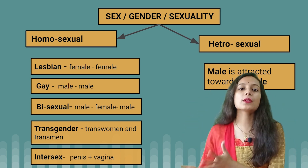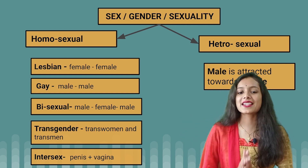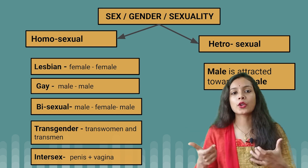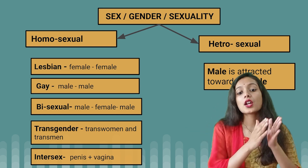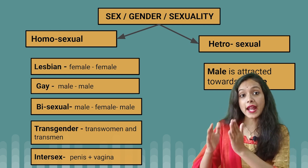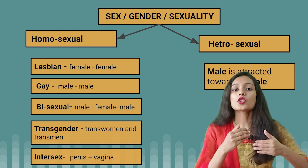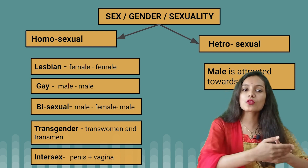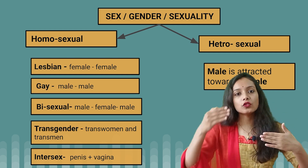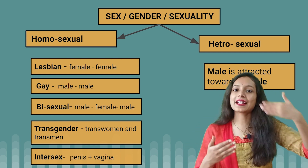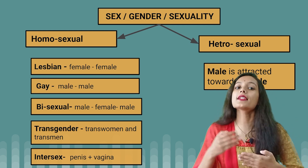Heterosexuals are normal male and female. Homos means same sex, and hetero means different sex. So heterosexuals are those people who are attracted to their opposite sex — like a male attracted towards a female and a female attracted towards a male. These types of people are known as heterosexuals.